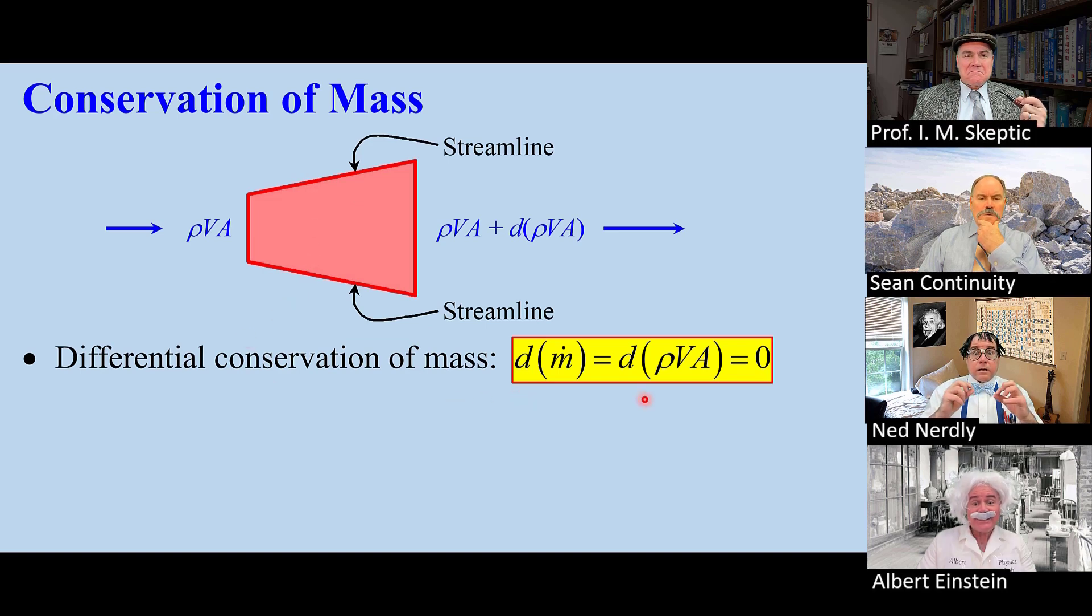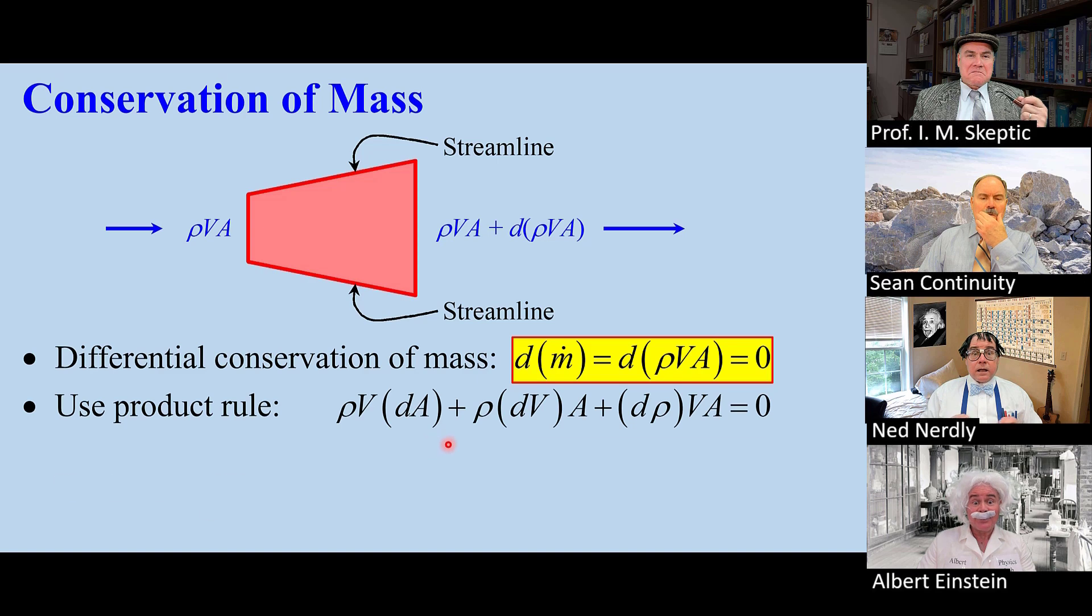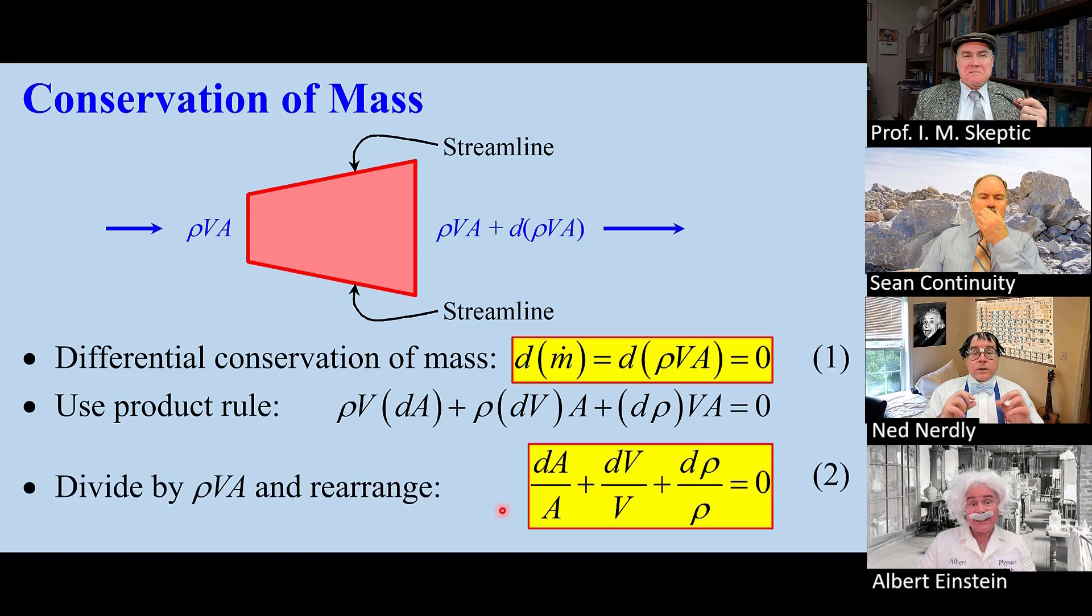Conservation of mass: d(ρvA) = 0. We use the product rule. Dividing by ρvA gives us equation two: dA/A + dV/V + dρ/ρ = 0.